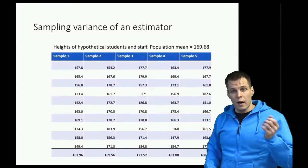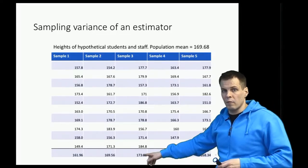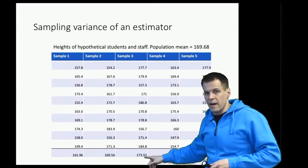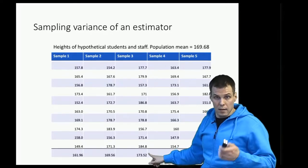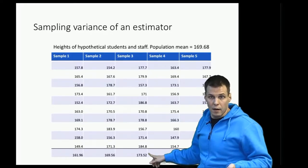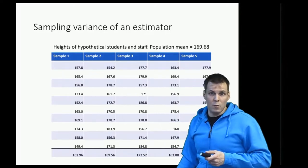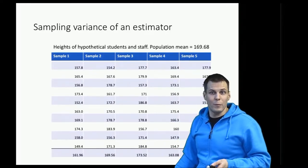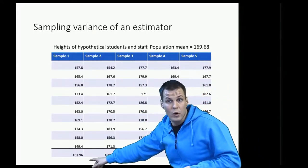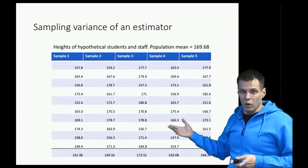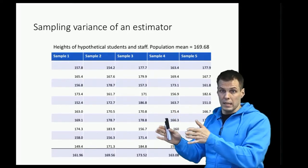Two questions arise: how do we make the estimates more precise, and how do we quantify the uncertainty? If the population value is 169 and our estimates vary between 161 and 173, that's quite imprecise. If we simply report that the mean height is 161 without disclosing that the sample size is so small that estimates are very imprecise, that's irresponsible. Recall the political polling example — when you see a poll number, there's always a margin of error attached to that point estimate.